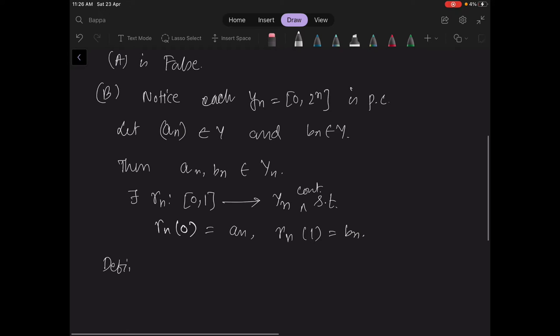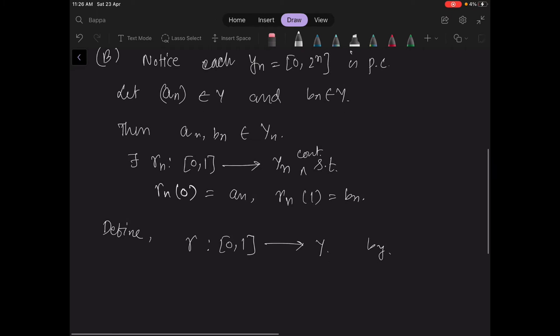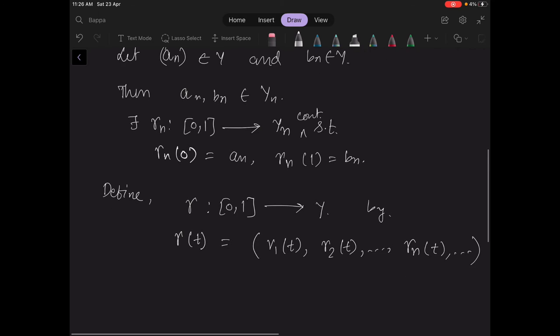Now define gamma from 0,1 to y by gamma of t equals gamma 1 of t, gamma 2 of t, gamma n of t and so on. Then this is a continuous map, because if we project down to each coordinate, pi n compose gamma of t equals gamma n of t is continuous.